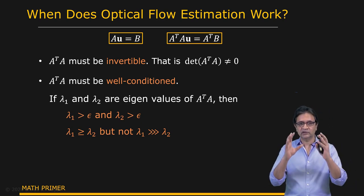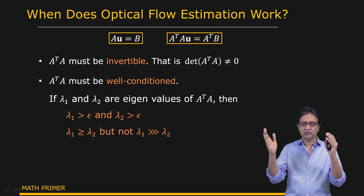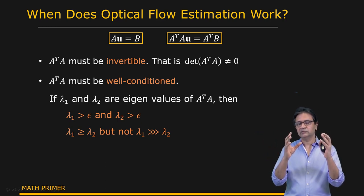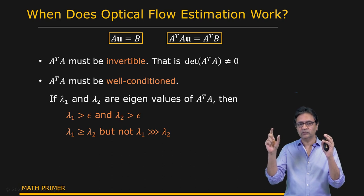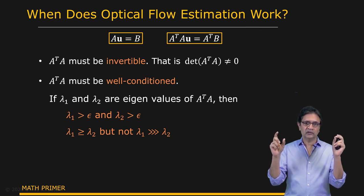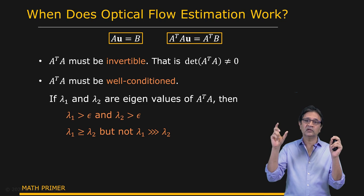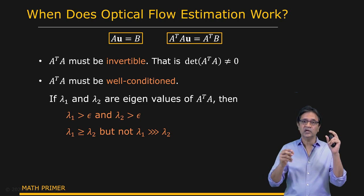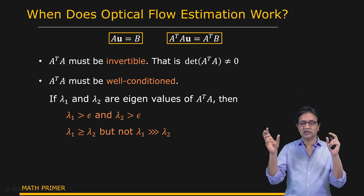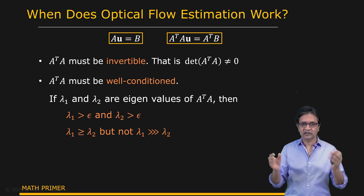What is a well-conditioned system? Let's say you have some system which has an input and an output. A well-conditioned system is one where you have a significant enough change in the output for a change in the input. When that is the case, you can take the output and estimate the input well enough. If you change the input and nothing happens in the output, then that's not a well-conditioned system.